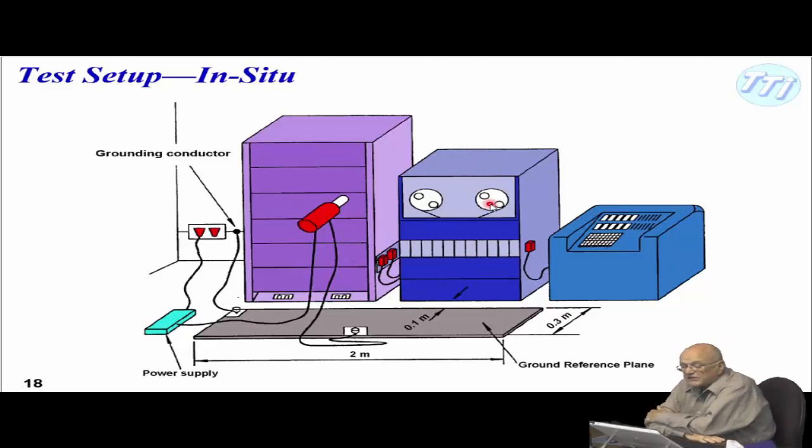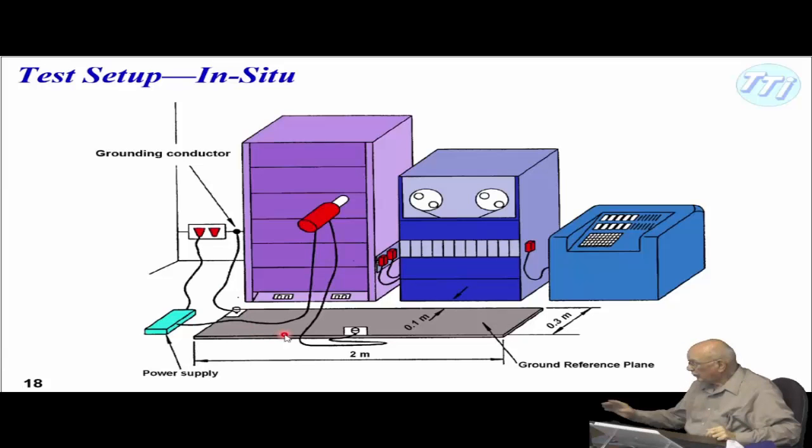Here's a case where you're actually going to do it in-situ. The big difference here is you've got actually a ground reference plane you bring in. This stuff is not tied down. Maybe it's in a control room. It could be in a computer room with insulated floors and things like that.